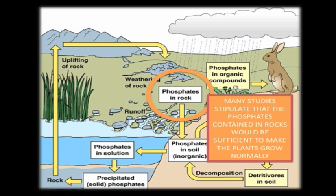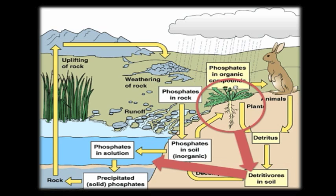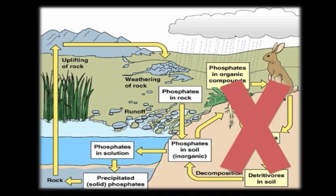A lot of this phosphate is already used by plants. Many studies even stipulate that the phosphates contained in rocks would be sufficient to make the plants grow normally. The fact that many plants use phosphates and then reject it in the soil makes the usage of fertilizers completely useless.